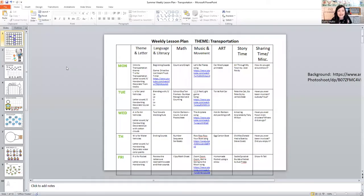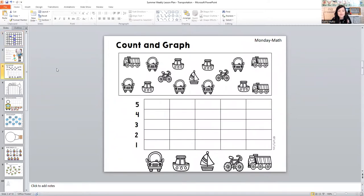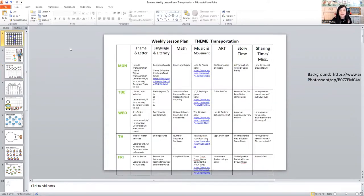For math we did a count and graph activity. I'll show you that worksheet. So students just looked for the car and then we colored in one bar for each space for each car. This is a bar graph and went back and answered questions about it. So I said, how many sailboats, how many cars, how many dump trucks. So that was our math for Monday.